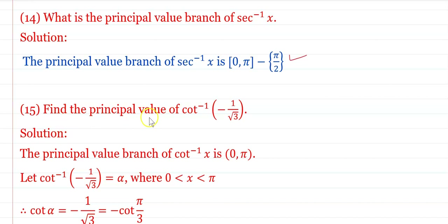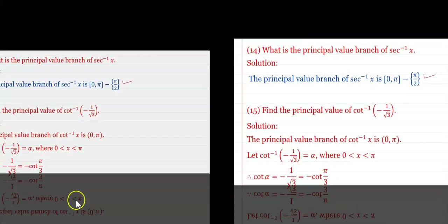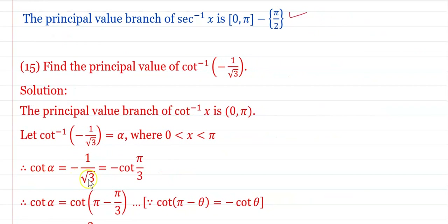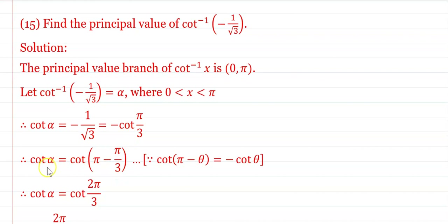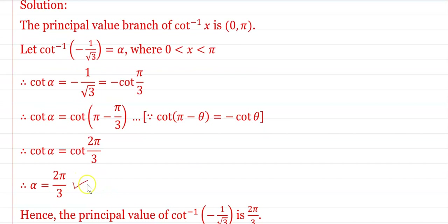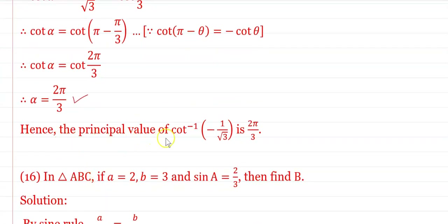Find the principal value of cot⁻¹(−1/√3). The principal value branch of cot⁻¹(x) is (0, π). Let cot⁻¹(−1/√3) = α. Then cot α = −1/√3 = −cot(π/3) = cot(π − π/3). After simplification, α = 2π/3. Hence the principal value of cot⁻¹(−1/√3) is 2π/3.